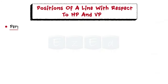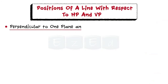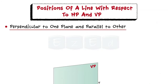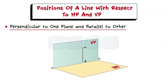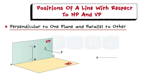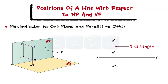Let us see a line perpendicular to one plane and parallel to the other. A line can be perpendicular to HP and parallel to VP, or perpendicular to VP and parallel to HP. For the first case, the representation of a line is as shown and its orthographic pattern is also shown. In this case, the front view is a vertical line which is the true length, and the top view is a point.